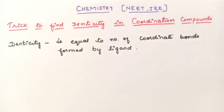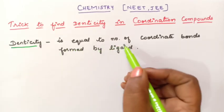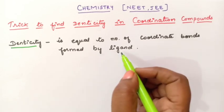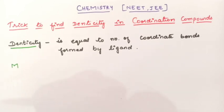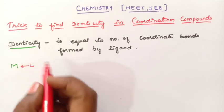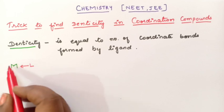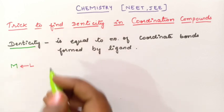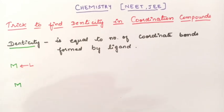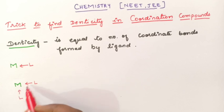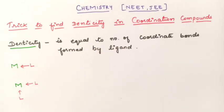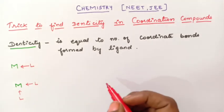First let us see what is the meaning of denticity. Denticity is equal to the number of coordinate bonds formed by the ligand. Suppose there is a central metal atom and here you have only one ligand, so denticity is one. If there are two ligands forming two coordination bonds, then denticity will be 2. So depending upon the number of coordinate bonds formed, the denticity of the compound will differ.